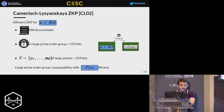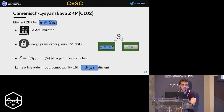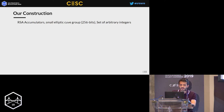A third drawback is that the set itself for which you are proving membership must be a set of quite large primes — say 260 bits.